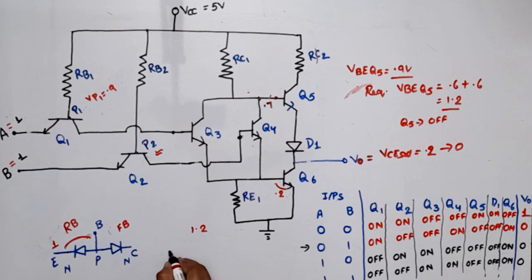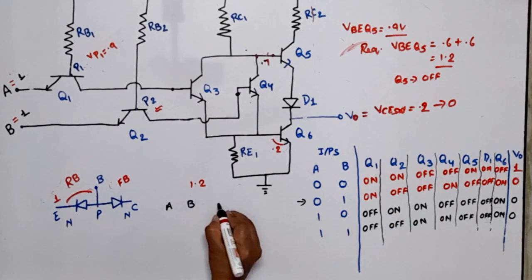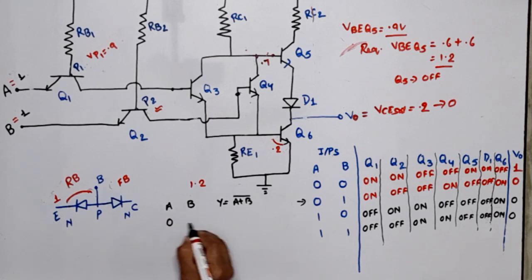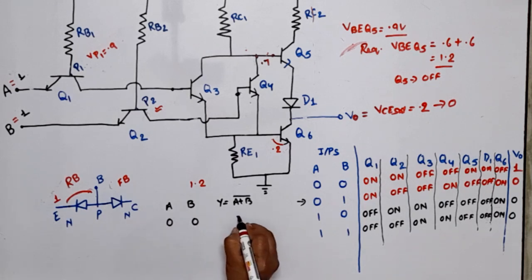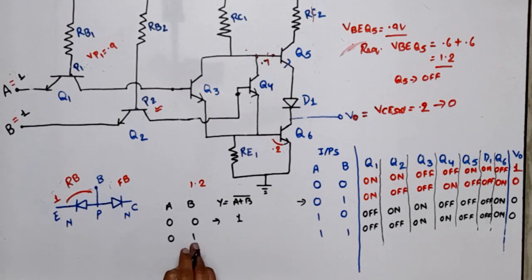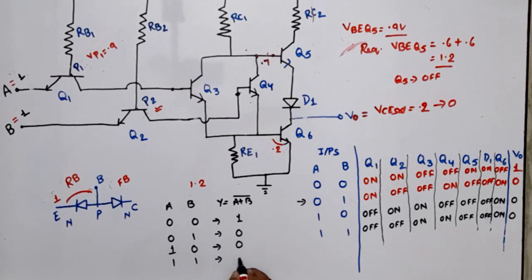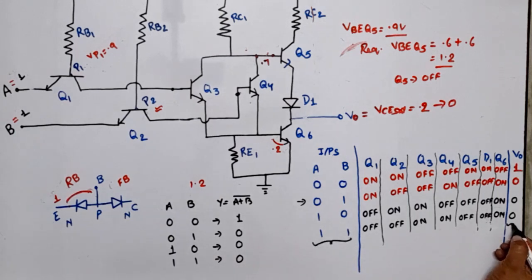Now let's verify with the NOR truth table. Y = complement of (A + B). For A=0, B=0: complement of (0+0) = complement of 0 = 1. For A=0, B=1: complement of (0+1) = complement of 1 = 0. For A=1, B=0: complement of (1+0) = 0. For A=1, B=1: complement of (1+1) = 0. Observing these two inputs and the output, we get this NOR truth table, which confirms the working of the TTL NOR gate. Thank you so much. If you still have any doubt, please write down in the comment section.